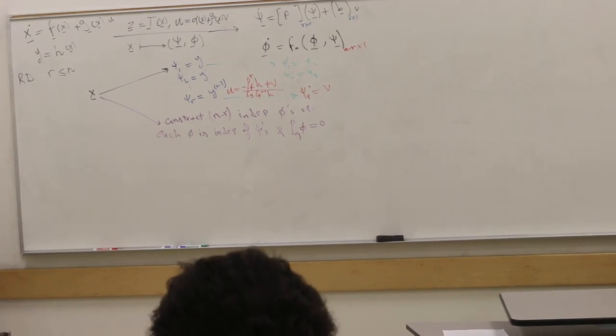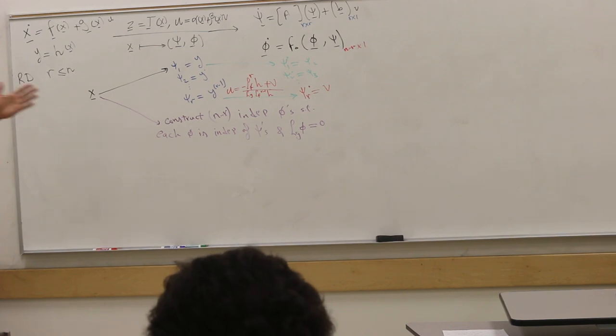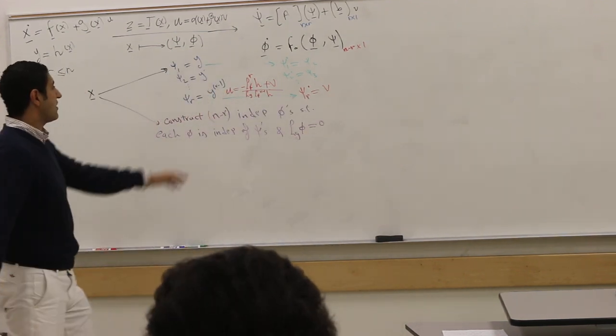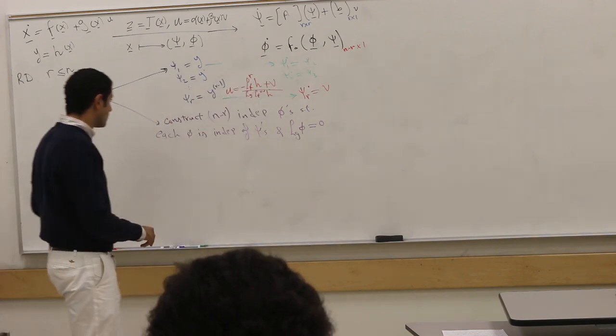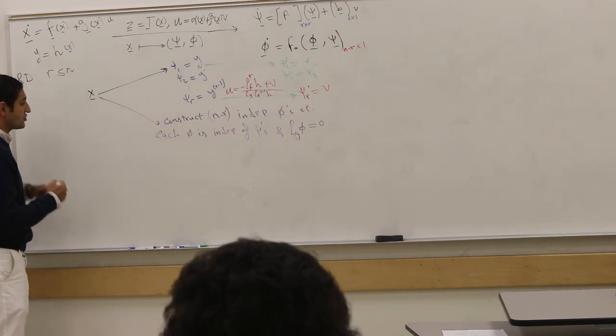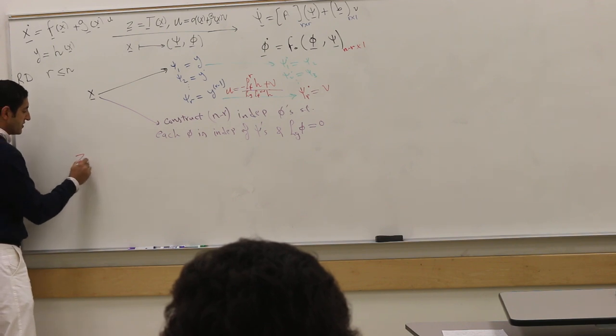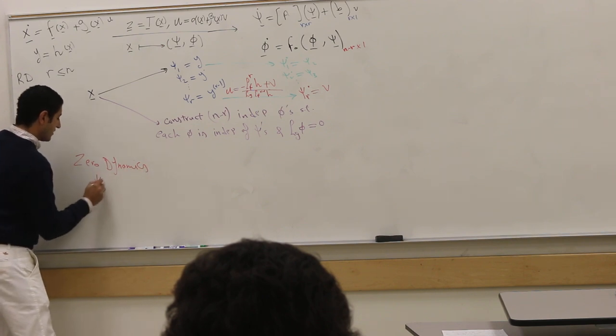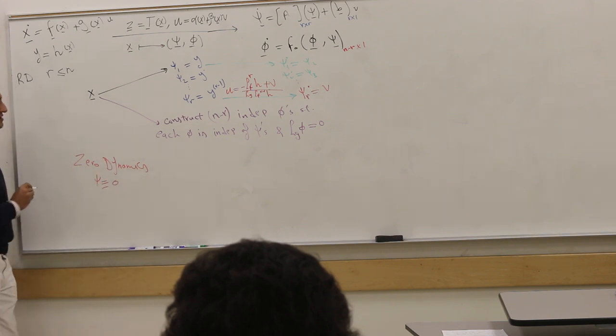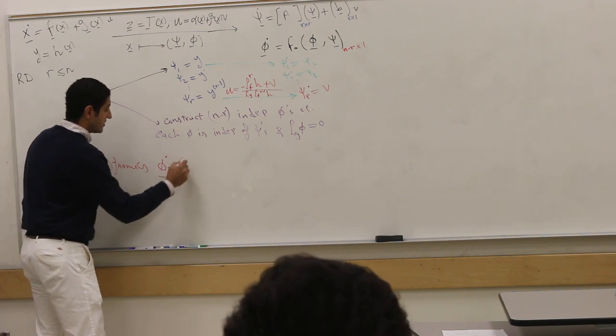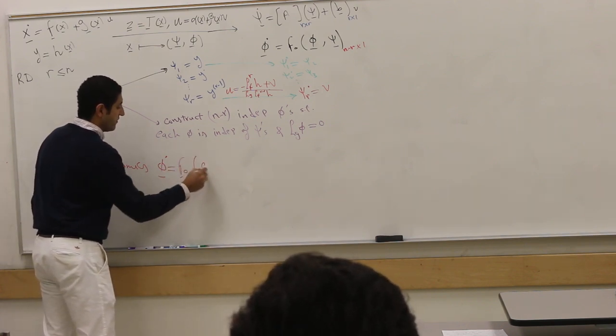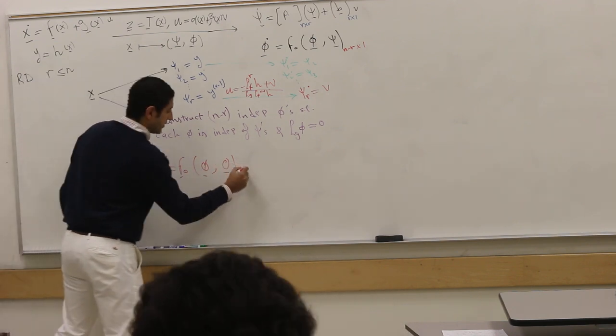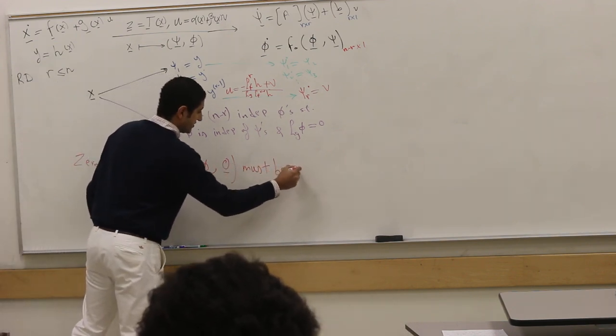The ψ dynamics is completely linear and controllable. You can do whatever you like with this new input V. The φ dynamics is evolving on its own, so to ensure stability we must check the zero dynamics.